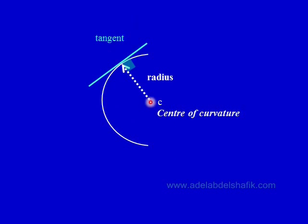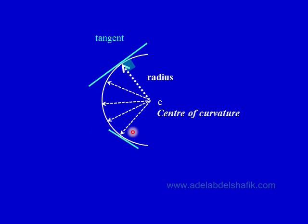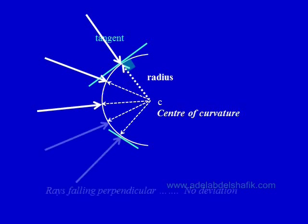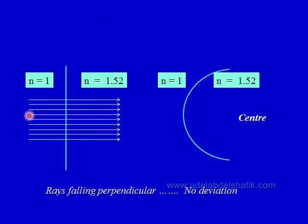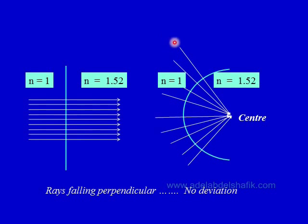If we draw a line tangent to the surface at any point, the line from the center of curvature to that point — the radius — is 90 degrees to the tangent. So all radii are perpendicular to the tangent at each point. If rays arrive perpendicular (90 degrees) to the surface, they continue along the same path without deviation — just as with a plane surface. On this curved surface, all rays arriving at 90 degrees continue undeviated and all reach the center of curvature.